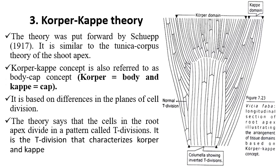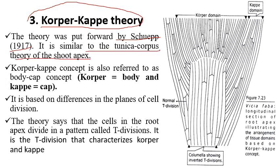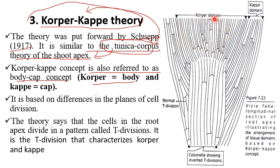The third and most important theory of root apical meristem is the corpus-calyptra theory. This theory was put forward by Scoop in the year 1970, and it is similar to the Tunica-Corpus theory of the shoot apex. The Tunica-Corpus theory is only applicable to shoot apical meristem, but not root apical meristem. The corpus-calyptra concept is referred to as the body-cap concept — corpus is the body and the outer layer surrounding the corpus domain is called the cap (calyptra).